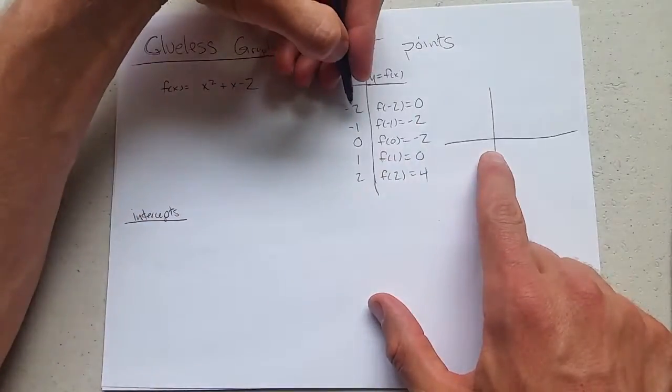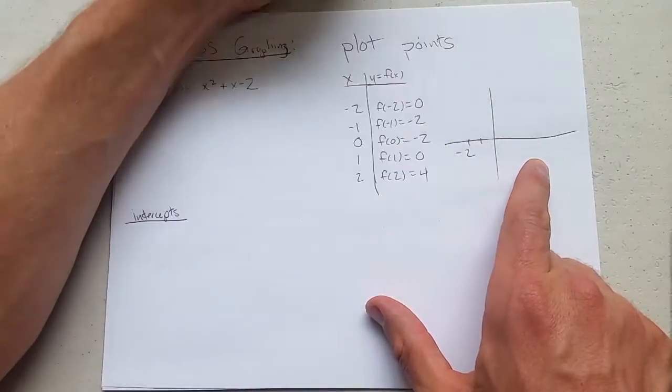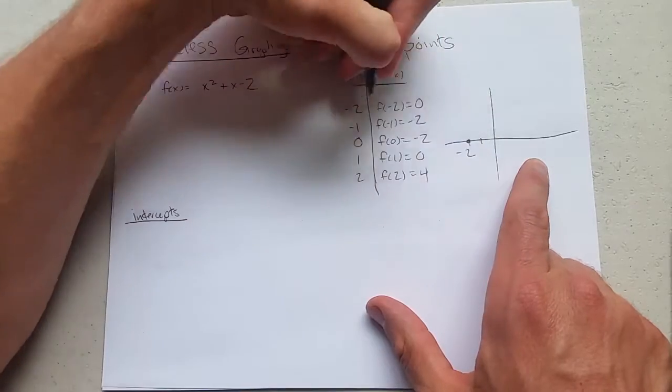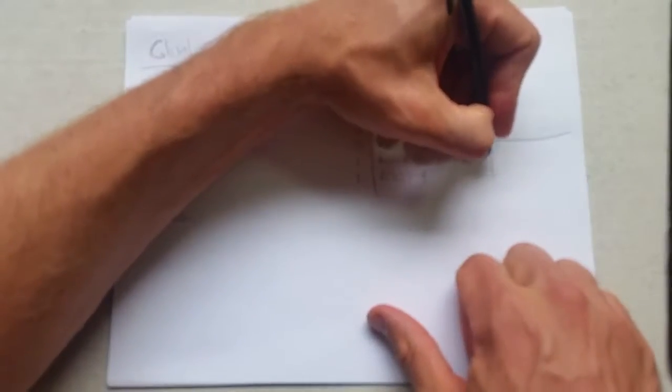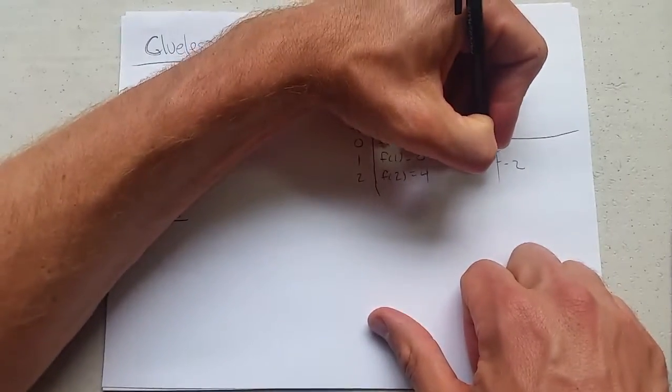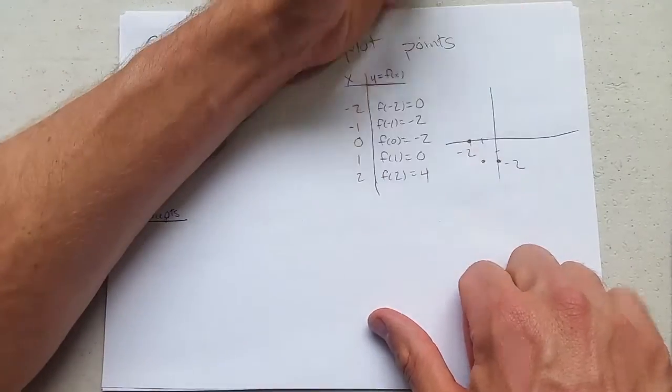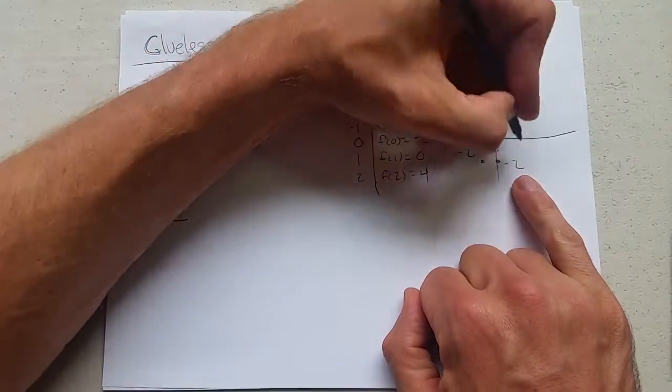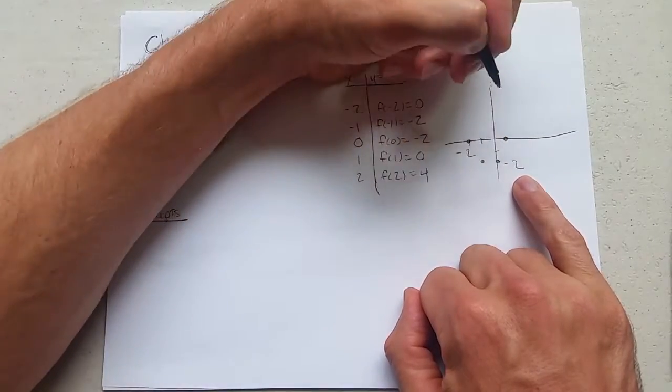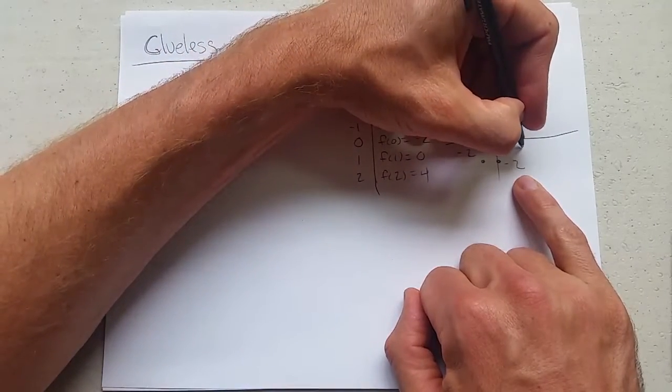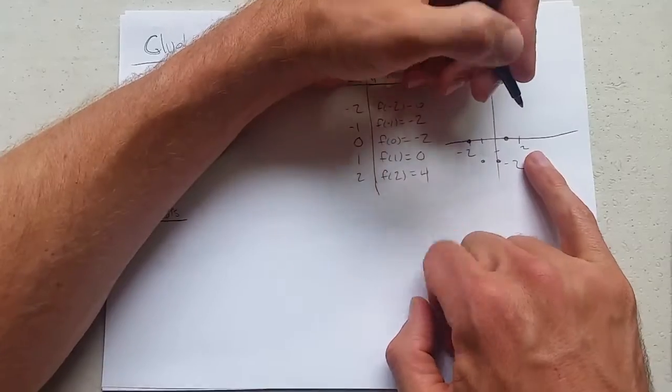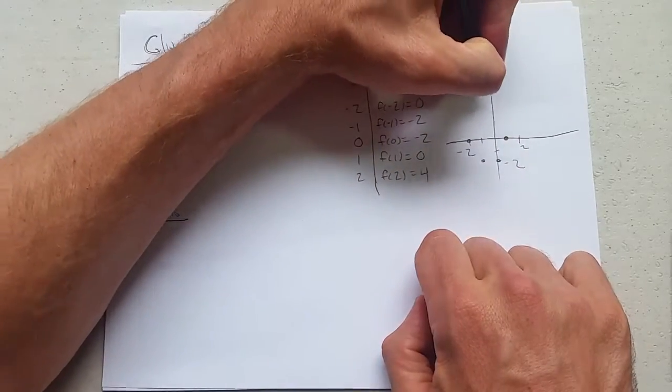We'll just start on negative 2. Negative 2 we have 0, negative 1 we have negative 2, 0 negative 2, 1 back up to 0, and at x equals 2 we have positive 4. Put that right up there, so we got these points right here.